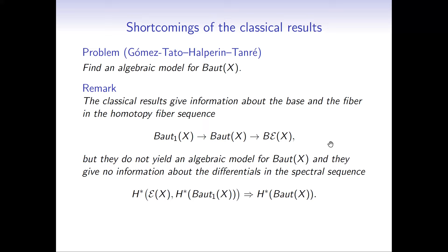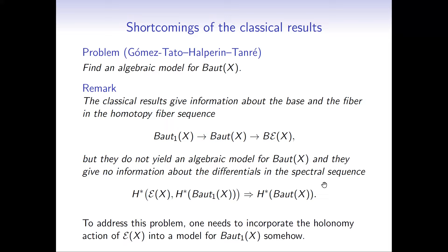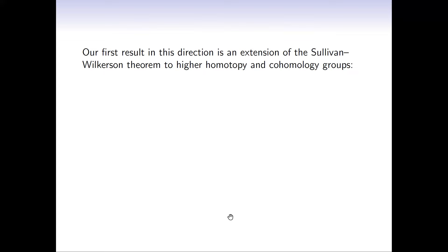That wasn't addressed in the classical literature, and that's what we want to do. Here is the first result we have in this direction, which can be viewed as an extension of the Sullivan-Wilkerson theorem to higher homotopy groups and to cohomology. If you look at the representations of the transformation group E(X) in the rational homotopy and cohomology of the universal cover, they are algebraic representations—restrictions of rational representations of the linear algebraic group. This is much better than just having representations of an abstract group.